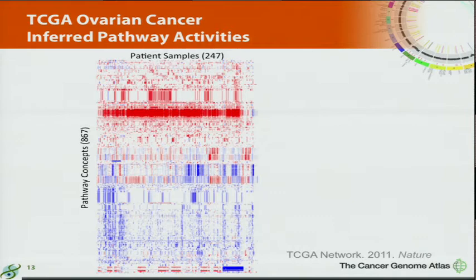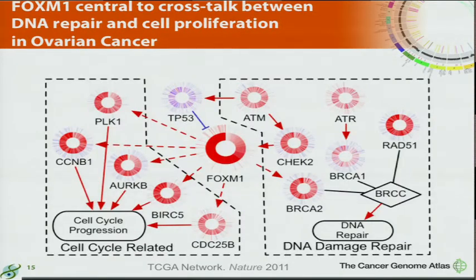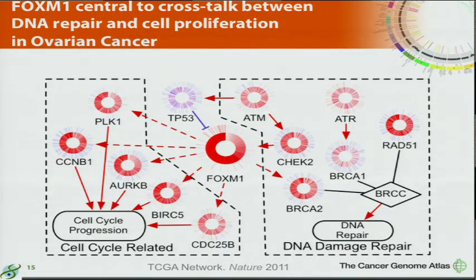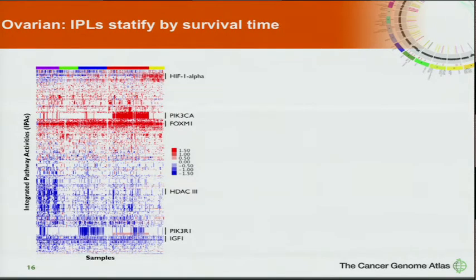For the ovarian study, the obvious signature from the PARADIGM analysis was the FOXM1 signature. When we zoomed in, almost all patients had upregulation of this known mitotic regulator FOXM1. It has two isoforms: one feeds into proliferation, the other into DNA repair. There are lots of genomic disruptions in ovarian samples — constituent activity signaling through ATM and ATR is turning on FOXM1, which if not correctly spliced promotes both proliferation and DNA repair. FOXM1 also regulates BRCA2, for example.